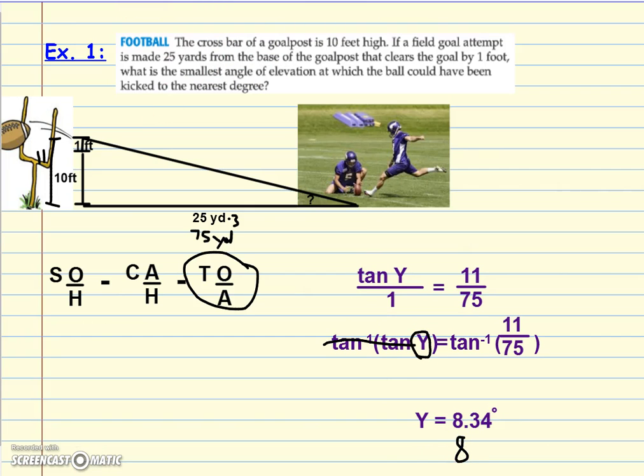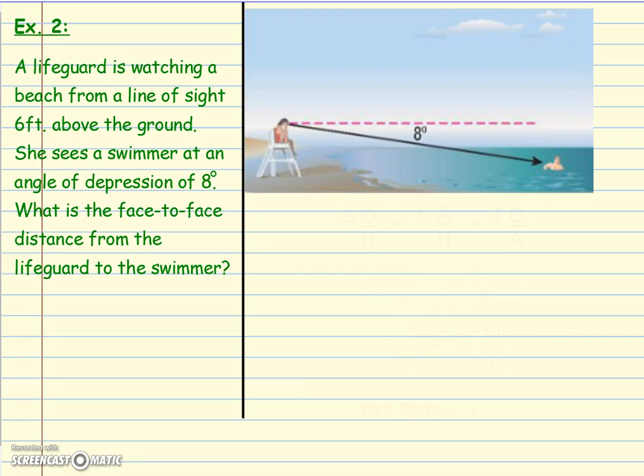Next example: a lifeguard is watching a beach from a line of sight six feet above the ground. She sees a swimmer at an angle of depression—meaning she has to look down—of eight degrees. What is the face-to-face distance from the lifeguard to the swimmer?